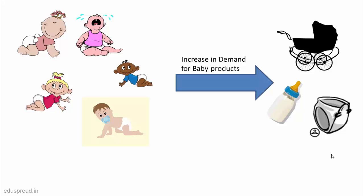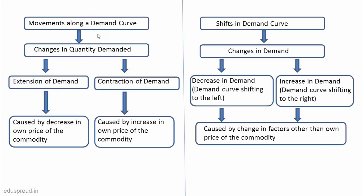With this we are done with the five main factors that lead to shifts in the demand curve. To summarize: movement along a demand curve leads to a change in quantity demanded — an increase in quantity demanded due to a decrease in the good's own price is called extension of demand, and a decrease due to an increase in price is called contraction of demand. Shifts in the demand curve lead to changes in demand — a leftward shift is a decrease in demand and a rightward shift is an increase in demand — caused by changes in factors other than the own price of the commodity.